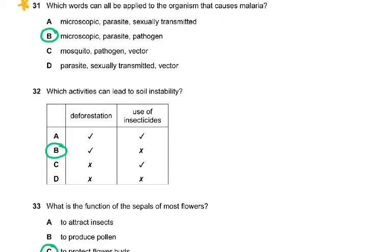Question 31, mentioned in the exam report: confusion between the vector — the mosquito — and the malarial pathogen itself led to incorrect answers. Which words can be applied to the organism that causes malaria? It is microscopic, it is a parasite, and it is a pathogen. It is not a vector — the female Anopheles mosquito is the vector. The organism that causes malaria is Plasmodium, which is a protozoa — not a bacteria, not a virus.